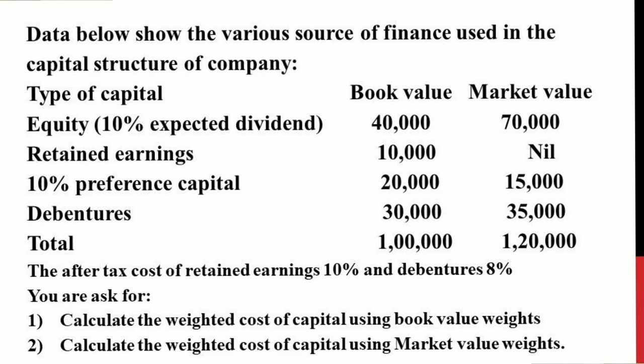Book value and market value sources: Equity shares with 10% expected dividend every year. The book value specific cost is 10%. Retained earnings are not adjusted. 10% preferential shares — specific cost not separate. Next, debentures: 30,000 adjustment.